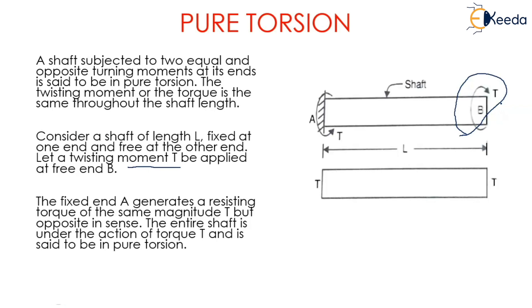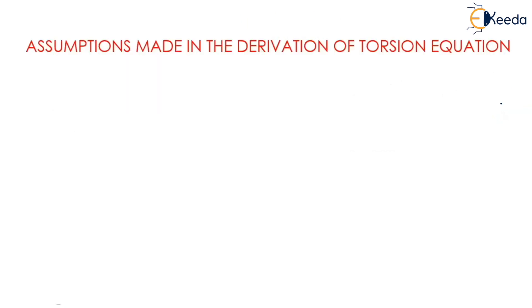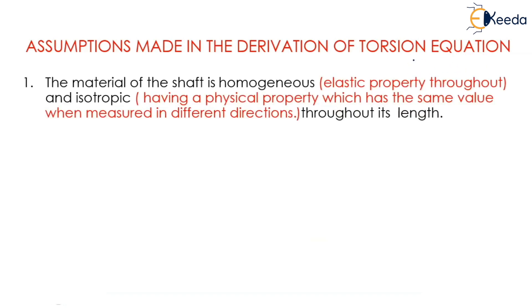Assumptions made in the derivation of torsion equation. The material of the shaft is homogeneous and isotropic throughout its length.